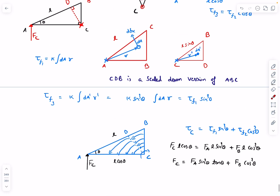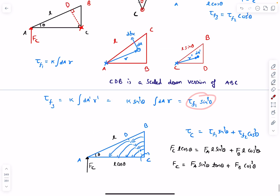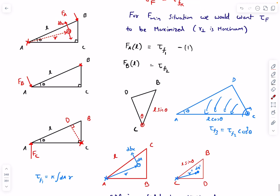In summary: we observed the similarity between sub-triangle CDB and case one, and sub-triangle CDA and case two, then related their torques using the scaling factor. Since both sub-triangles must be overcome simultaneously to rotate the full triangle about C, we added their torques. Setting FC times L cos theta equal to their combined torques gives the final answer. If you have any doubts, comment below - and if you enjoyed the video, like, share, and subscribe. Thanks for watching!